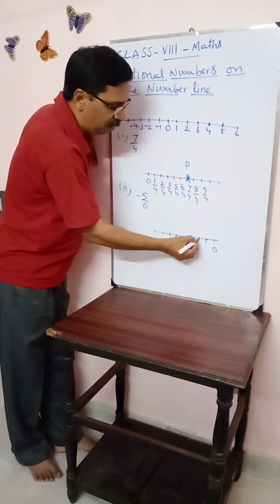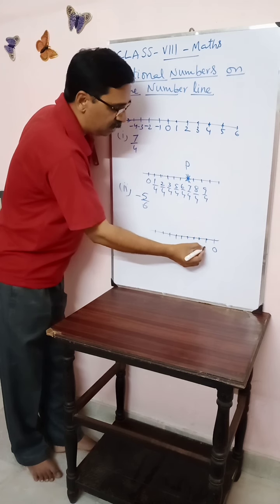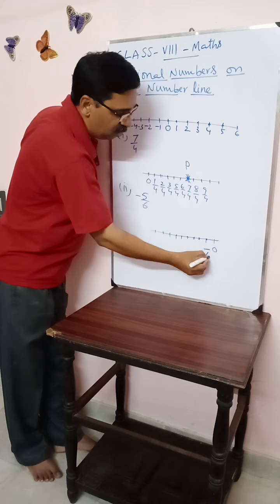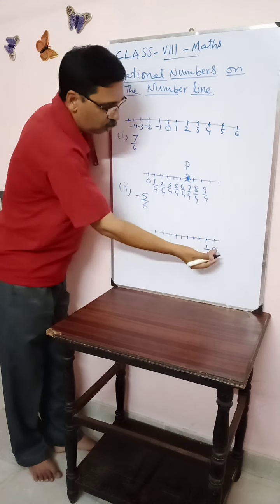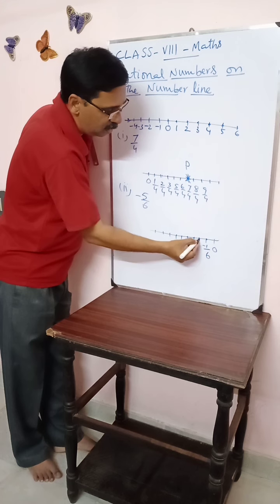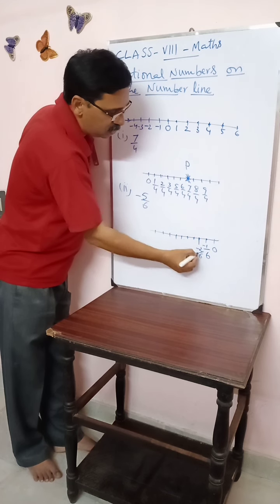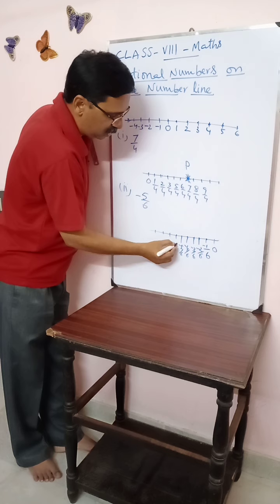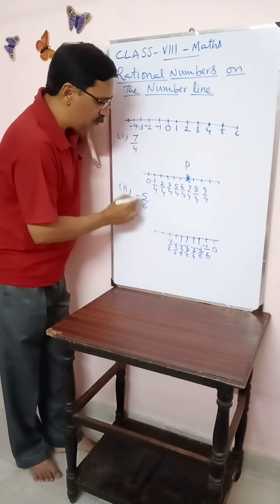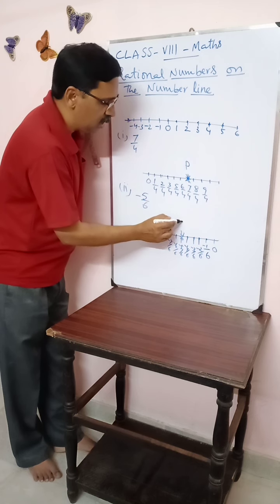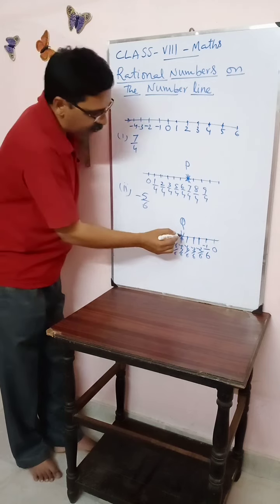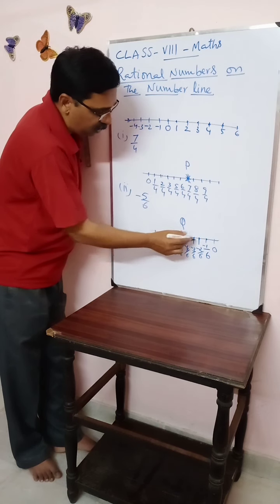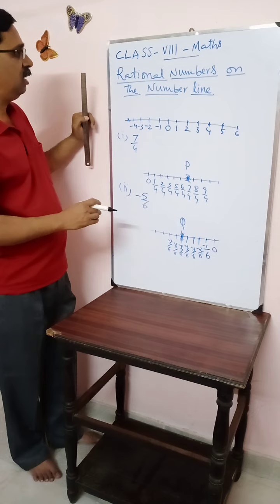Every unit distance is to be represented with denominator six. So going left: minus one by six, minus two by six, minus three by six, minus four by six, minus five by six, minus six by six, and so on. We want only minus five by six, so it comes here — point Q. Minus five by six is represented here on the number line.